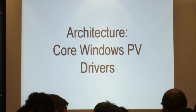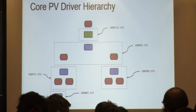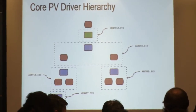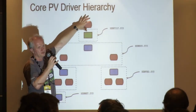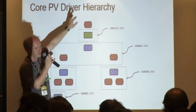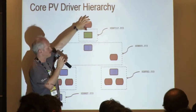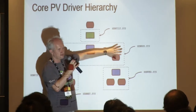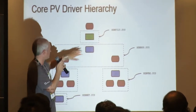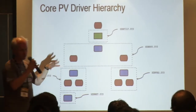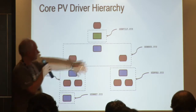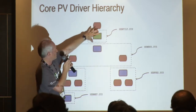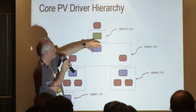Looking specifically at the Windows PV drivers: the physical device object at the top is the Xen platform device, created by QEMU and enumerated by the PCI bus driver. We install the Xen bus driver, and as its FDO it creates physical device objects — I've shown two core ones here: one for the network subsystem and one for the storage subsystem. We also have a filter device object sitting between them — that's a class-based filter, which I'll come to in a moment.